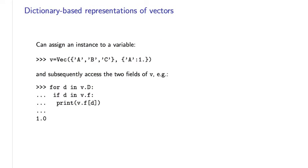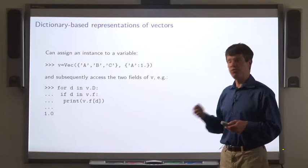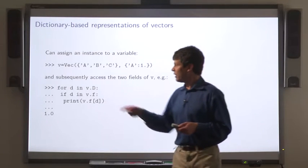Now, we can assign this vector to a variable and access the two fields of V using a dot notation.